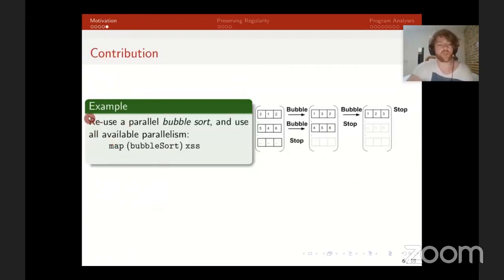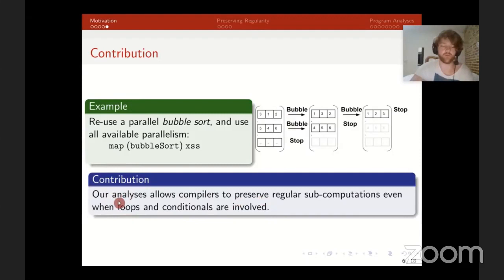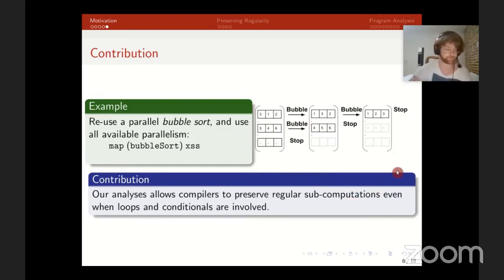Our contribution: take a parallel bubble sort that you want to apply to multiple arrays using all available parallelism — you just write map bubble_sort xss. The bubble sort will keep applying the bubble step until sorted. This looping is unpredictable. Our key contribution is that with our analysis, we allow compilers to preserve regularity, if applicable in a subcomputation, even when loops and conditions are involved. In bubble sort, the arrays do stay regular — they keep the same shape throughout.